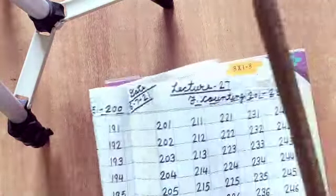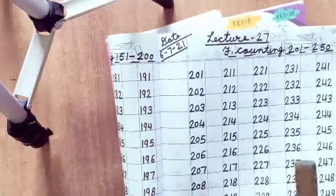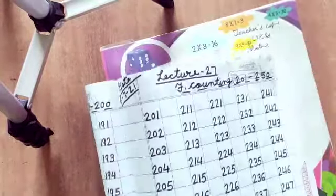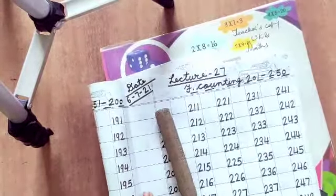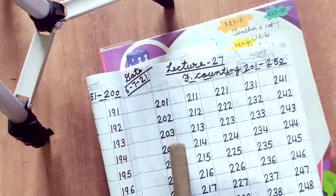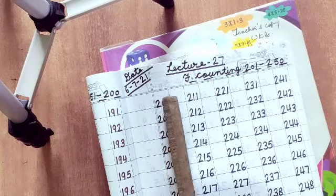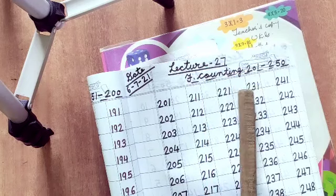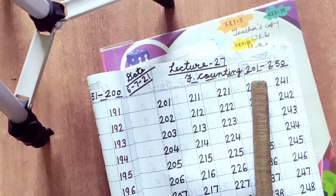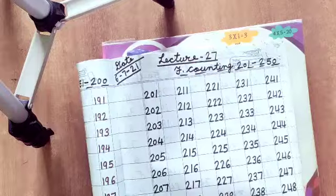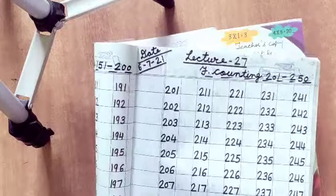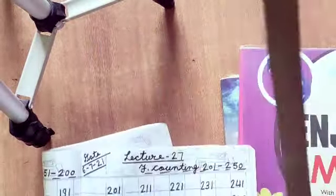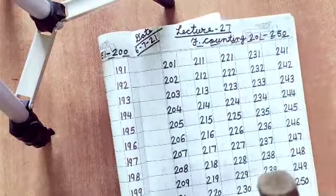Understood all of you? You know what is the date today? Today is 6 July, 7 months, 2021 year, lecture number 27, forward counting 201 to 250. So now we can start our class. Okay, we can start our class without wasting the time.